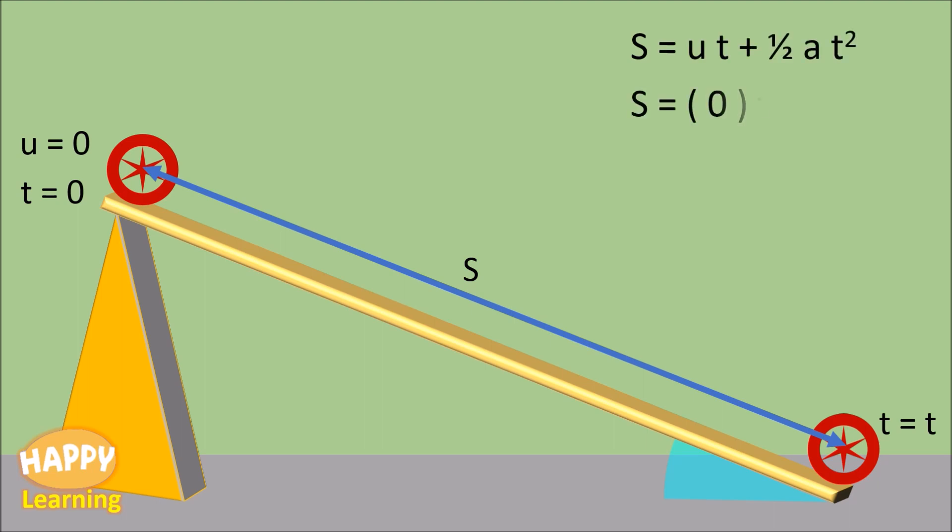Using the equation of motion, second one, s equal to ut plus half a t square. For u equal to zero, you get the equation a equal to 2s by t square. This is the formula we are going to use to find the acceleration.